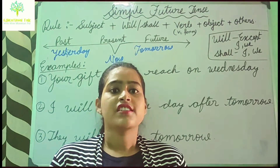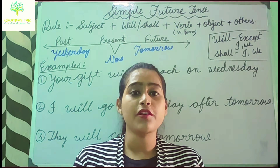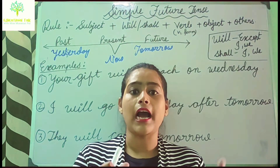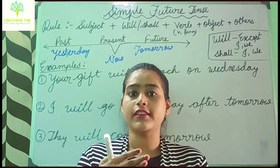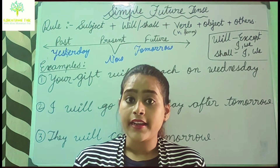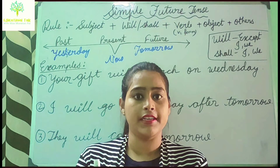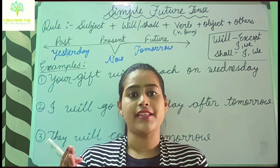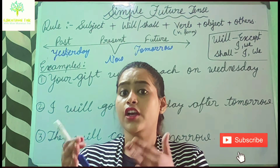We use simple future tense to talk about an action which will happen later. For example, 'I will go there tomorrow' — that action will happen later. We also use simple future tense for prediction of events, like 'We will win the match' — I am thinking that we will win the match, so this is my prediction.